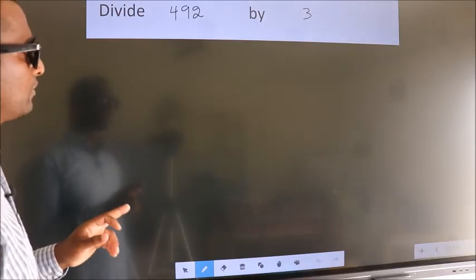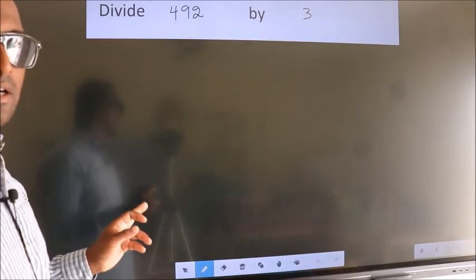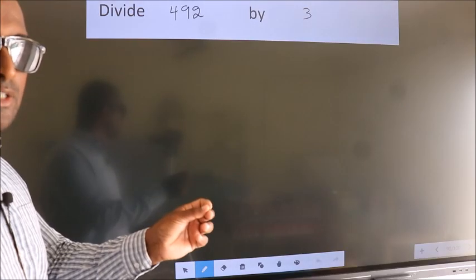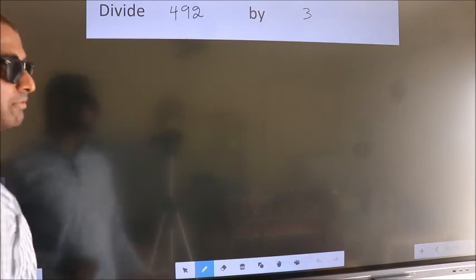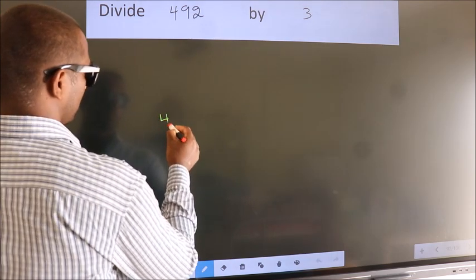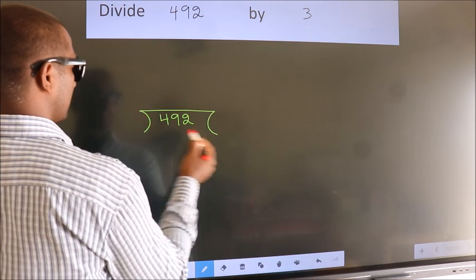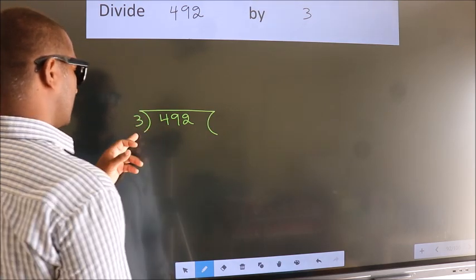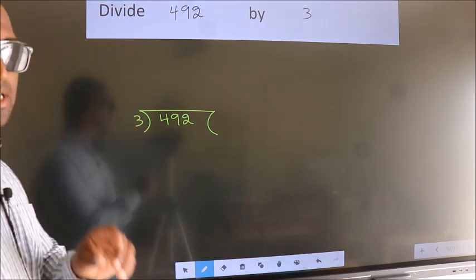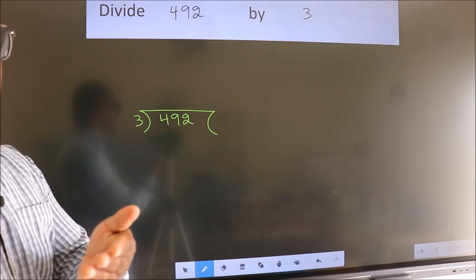Divide 492 by 3. To do this division, we should frame it in this way. 492 here, 3 here. This is your step 1. Next,